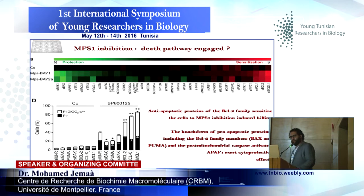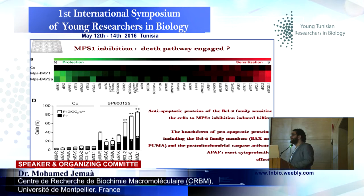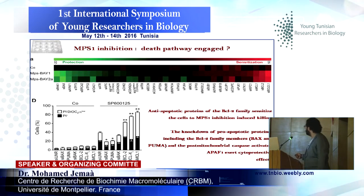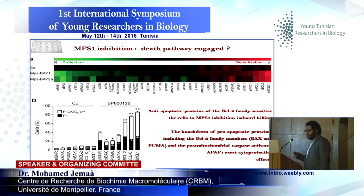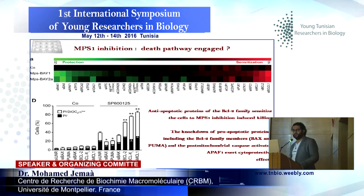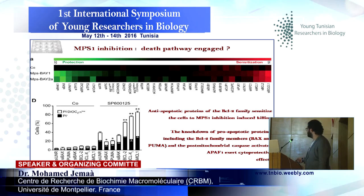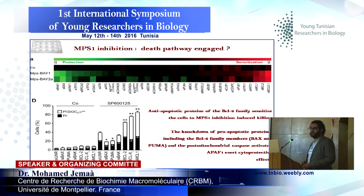When we inhibit the anti-apoptotic proteins of the BCL2 family, we sensitize the cell to MPS1 inhibition — for example, after using siRNA of MCL1 or BCL-XL. And conversely, when we knock out the pro-apoptotic proteins, including the BCL2 family members BAX and PUMA, and the post-mitochondrial caspase activator APAF1, we exert a cytoprotective effect.